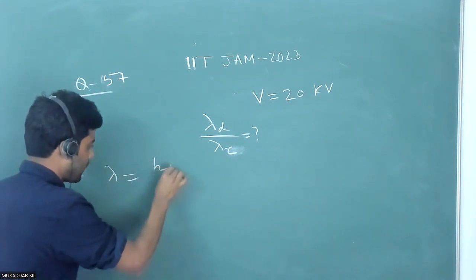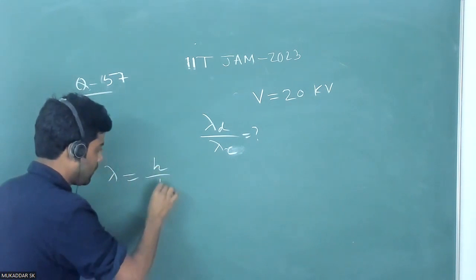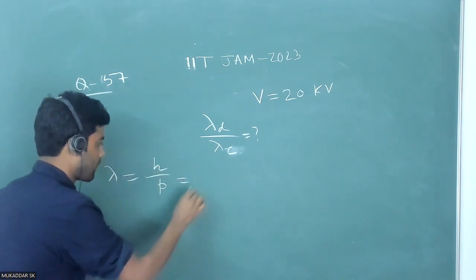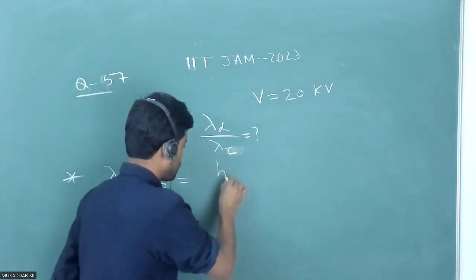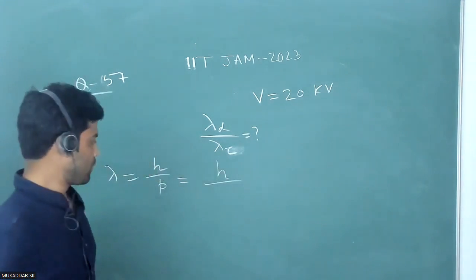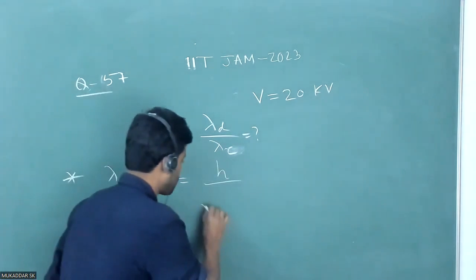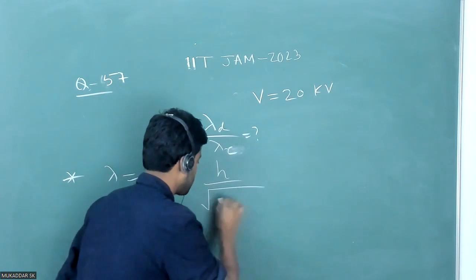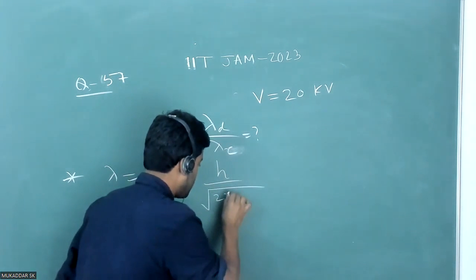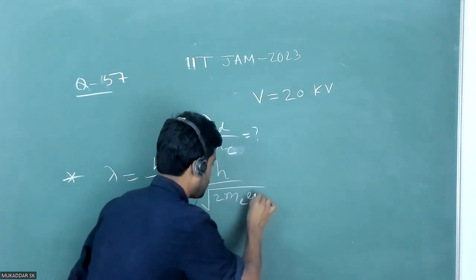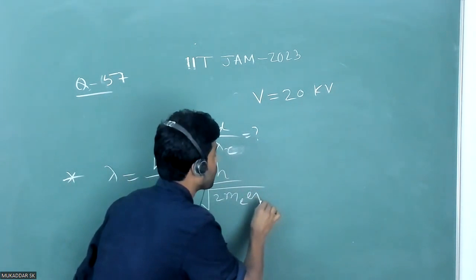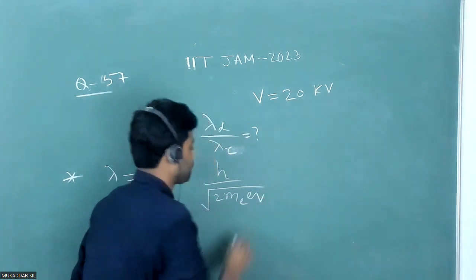The de Broglie wavelength of the electron is given by λ = h/p, and substituting the expression for momentum p, that becomes h divided by the square root of 2·m_e·e·V. This is equation number one.